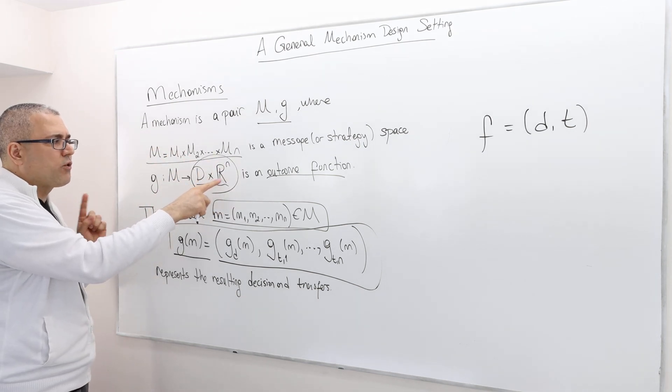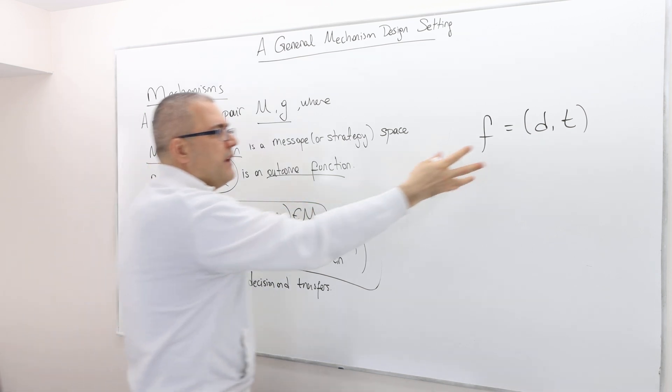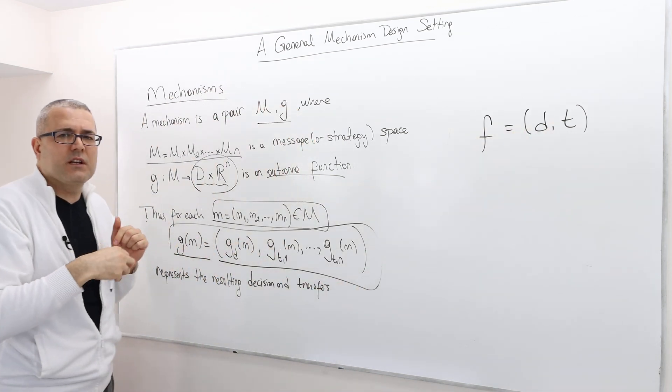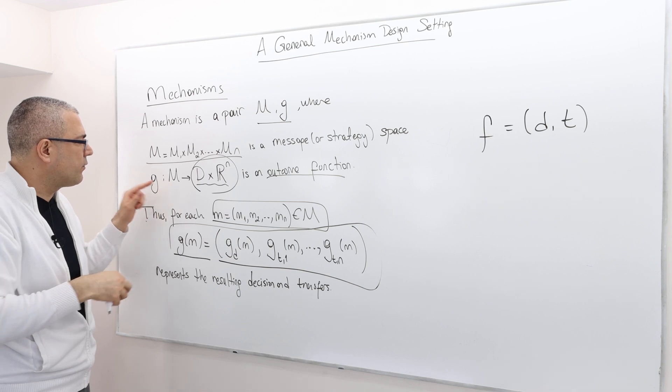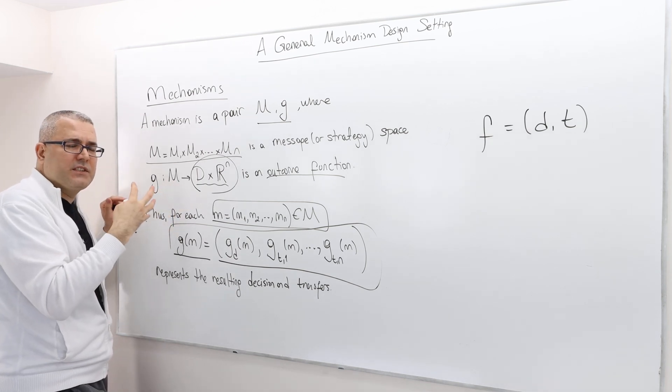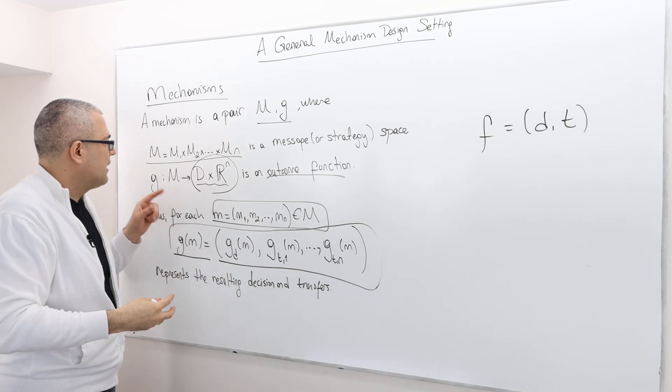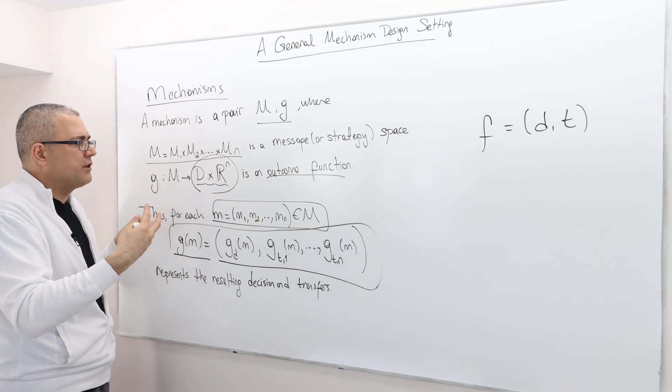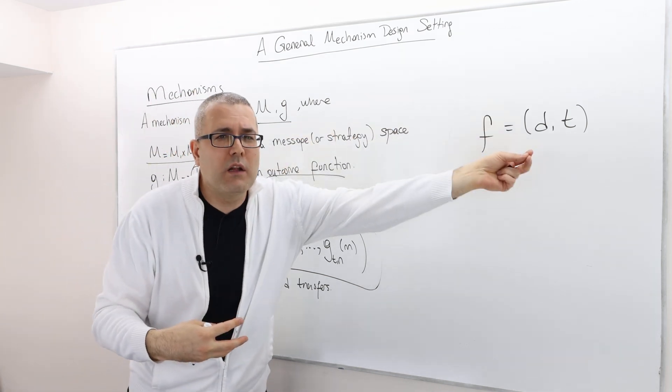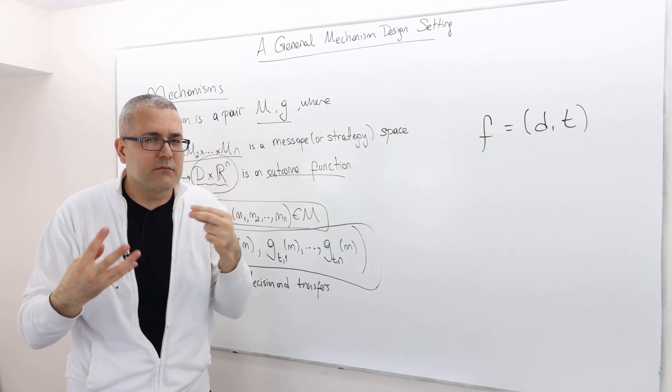The range is D cross R^N, which is basically where the social choice functions are coming from. So therefore, M is the message space. So for any declared messages, the G, the outcome function is going to choose one social choice function. All right.